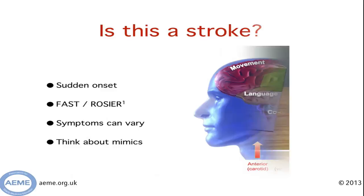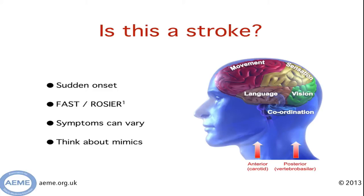Before we get to that stage, you need to think about whether the patient is having a stroke. Remember that stroke is a vascular event in the brain, and as such the onset of symptoms will be sudden. You can use any screening tools you might know, such as FAST or ROSIER, but remember that depending on the vascular territory affected, and the fact that different areas of the brain have different functions, the symptoms can vary and they can be mixed.